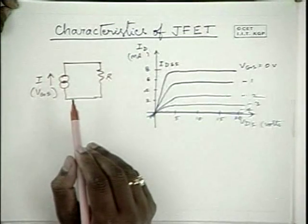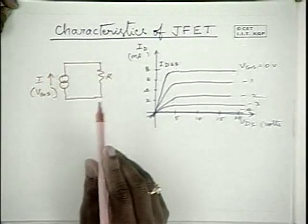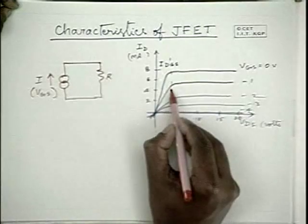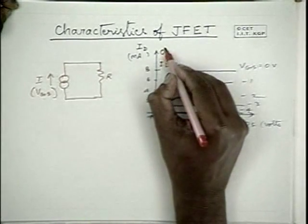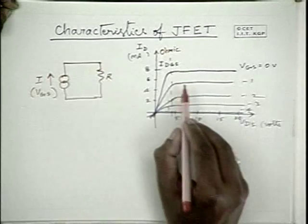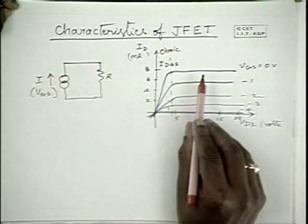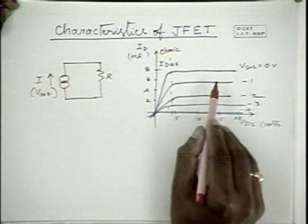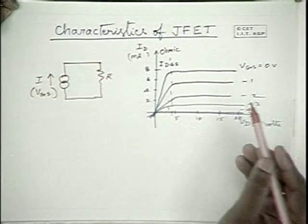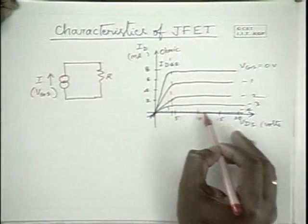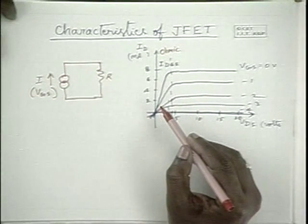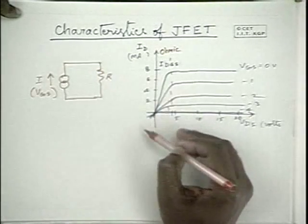In general, it can be used as a voltage dependent current source. This region is known as the ohmic region where it acts like a resistance, and this region is the saturation region where we use it as a constant voltage dependent current source, and that is responsible for amplification. For amplification application, you operate the FET in this region. Whereas for a voltage dependent resistance application, you use it in this region.